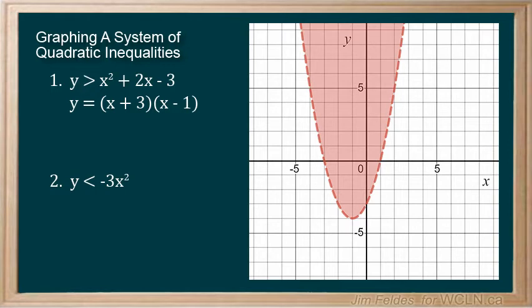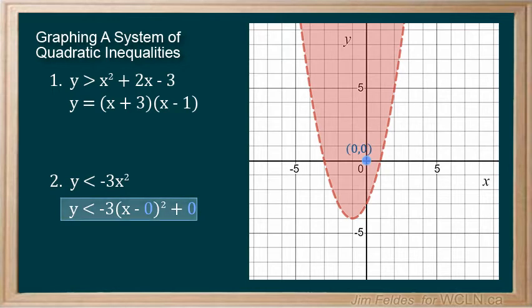With the second inequality, we recognize it has a vertex of 0, 0, shown in graphing form just to reinforce the concept. And, a being negative 3, we know if we move 1 from the vertex on the x-axis in either direction, we must go down 3,